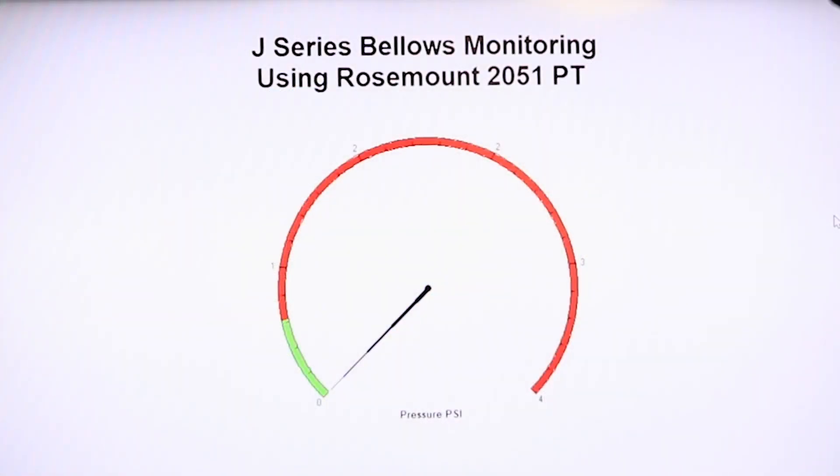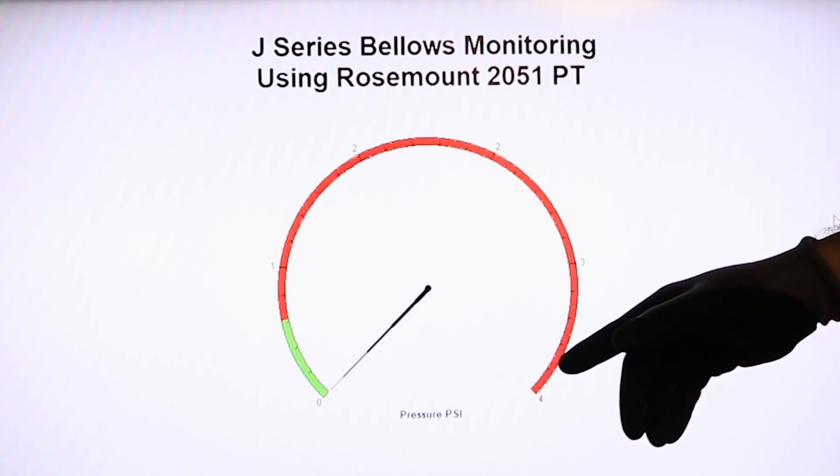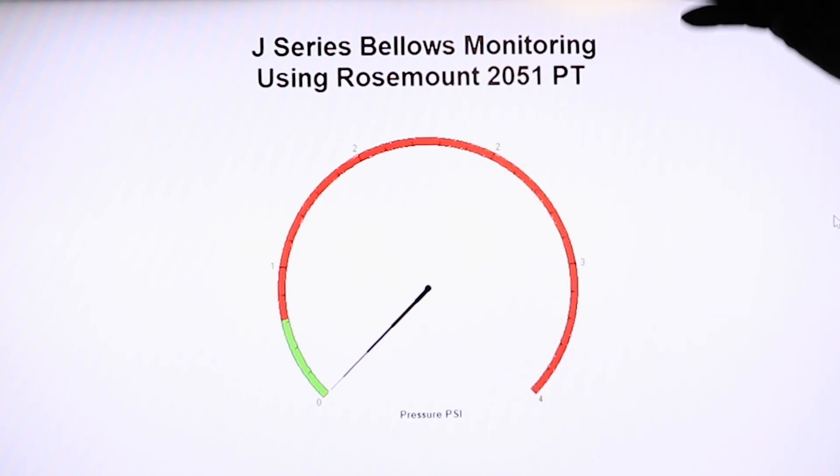In this graph, the only thing we're graphing is the pressure at that secondary chamber that gets created between the bellows and the backup piston. With an undamaged bellows, you should never see any increase in pressure in that secondary chamber. Any increase in pressure that you see in that secondary chamber means that the bellows has been compromised.